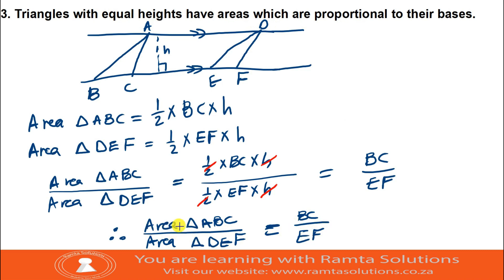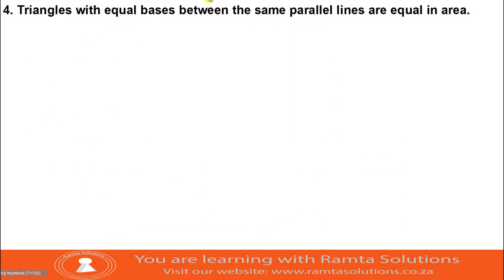Triangles with equal heights have areas which are proportional to their bases. If at the numerator you took triangle ABC, on the right-hand side you must take the base of triangle ABC which is BC. Your denominator was triangle DEF, so the denominator on the right must be the base of DEF which is EF. So we were able to prove this. Now let's get to the fourth one.